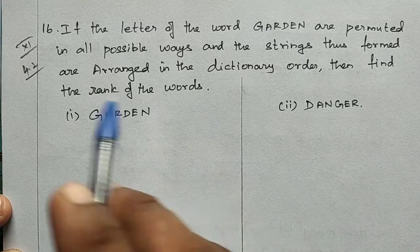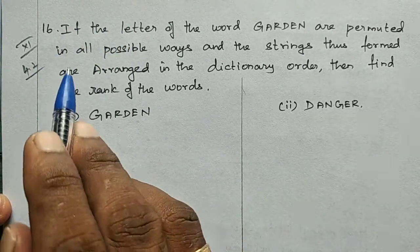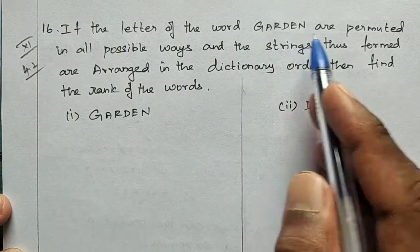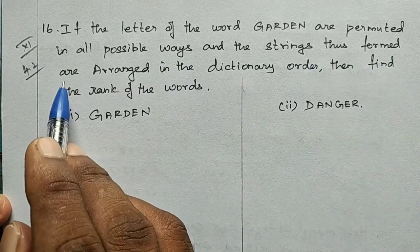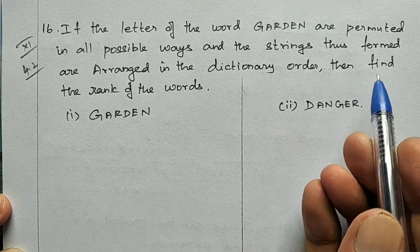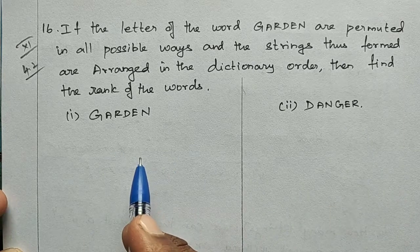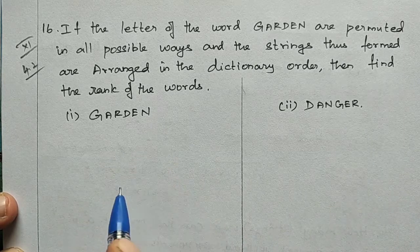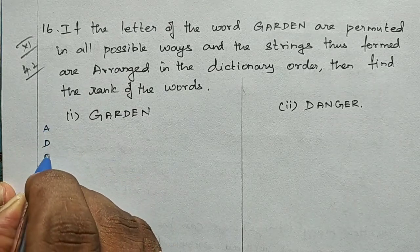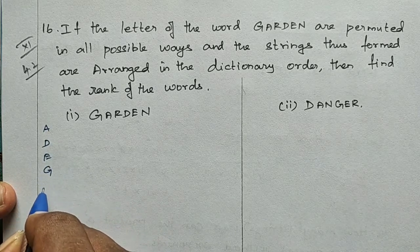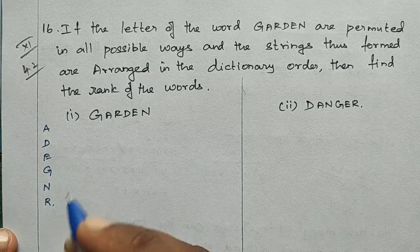Hi students, 11th Maths Exercise 4.2 Question 16. If the letters of the word GARDEN are permuted in all possible ways and the strings formed are arranged in dictionary order, find the rank of the words GARDEN and DANGER. First, arrange letters of GARDEN and DANGER in alphabetical order: A, D, E, G, N, R.